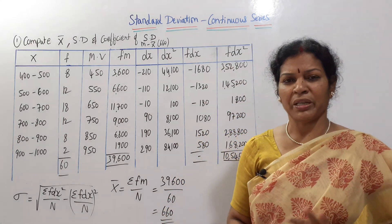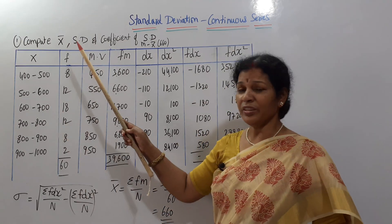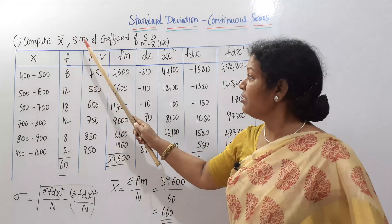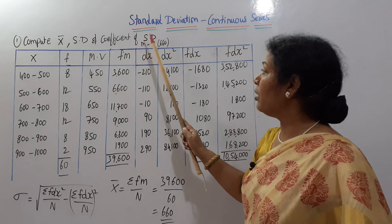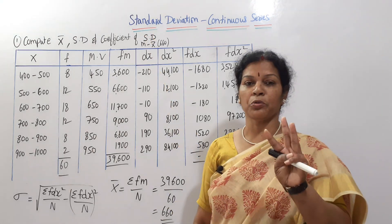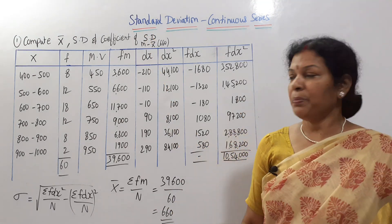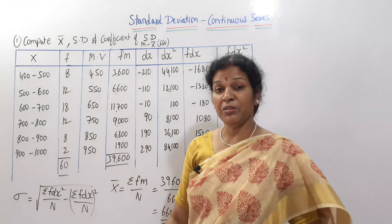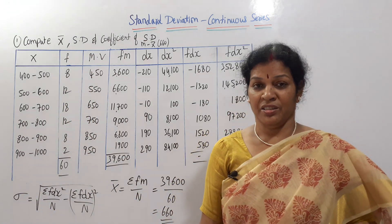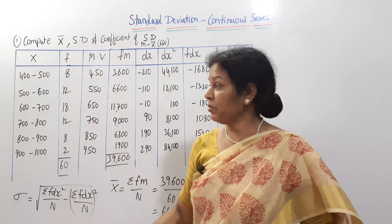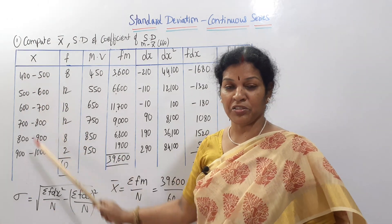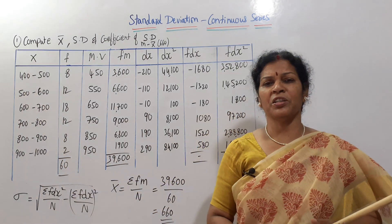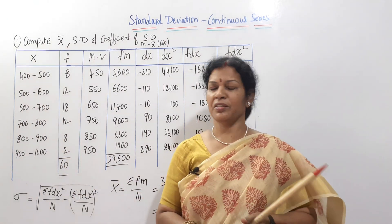We have a problem. We need to compute x-bar (arithmetic mean), standard deviation (SD), and coefficient of standard deviation. We have x values as class intervals — 400 to 500, 500 to 600. This is a continuous series with class interval and frequency.